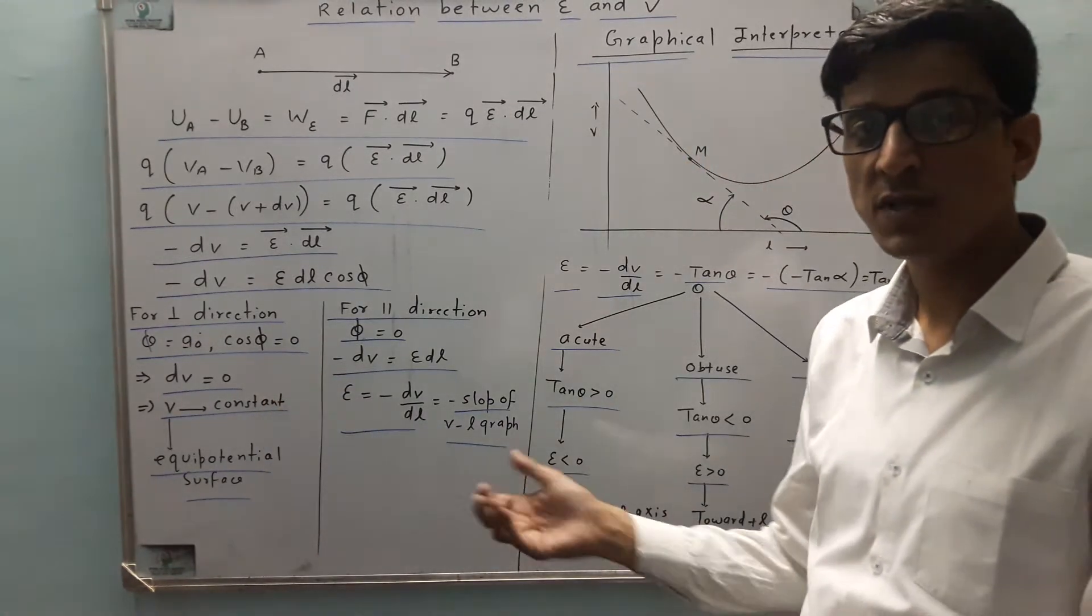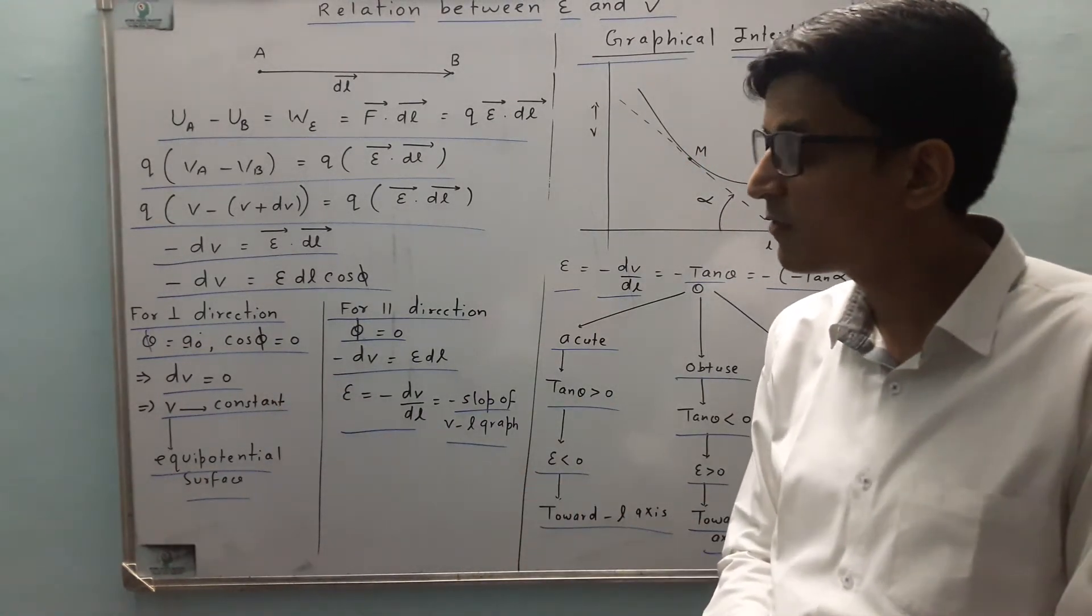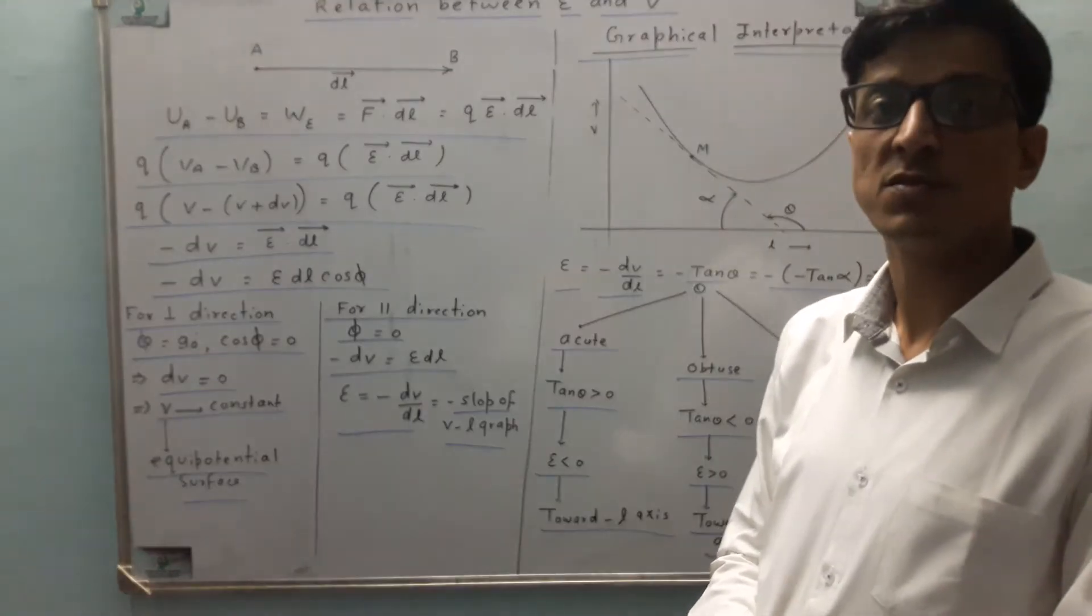That means V is constant, which means it's called an equipotential surface, because potential is constant there.